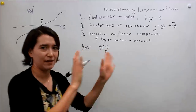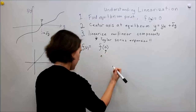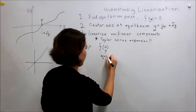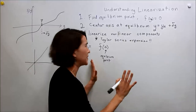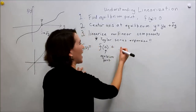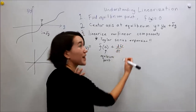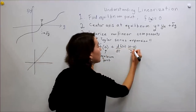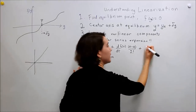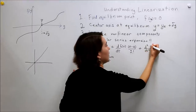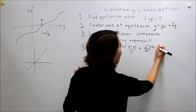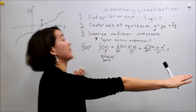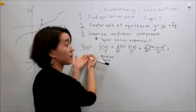So f(a) — here a is the equilibrium point, the point you're linearizing around. Then you take the first derivative df/dt evaluated at a, and multiply by (x − a) over 1 factorial. The next term has the second derivative d²f/dt² evaluated at a, times (x − a)² over 2 factorial. This goes on infinitely — it's an infinite series. With the full infinite series it equals your original nonlinear function.